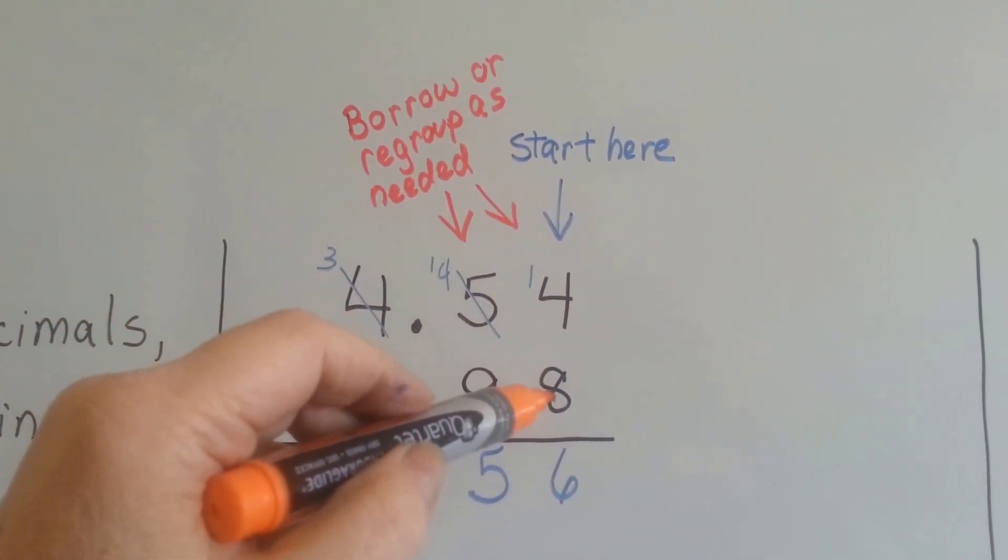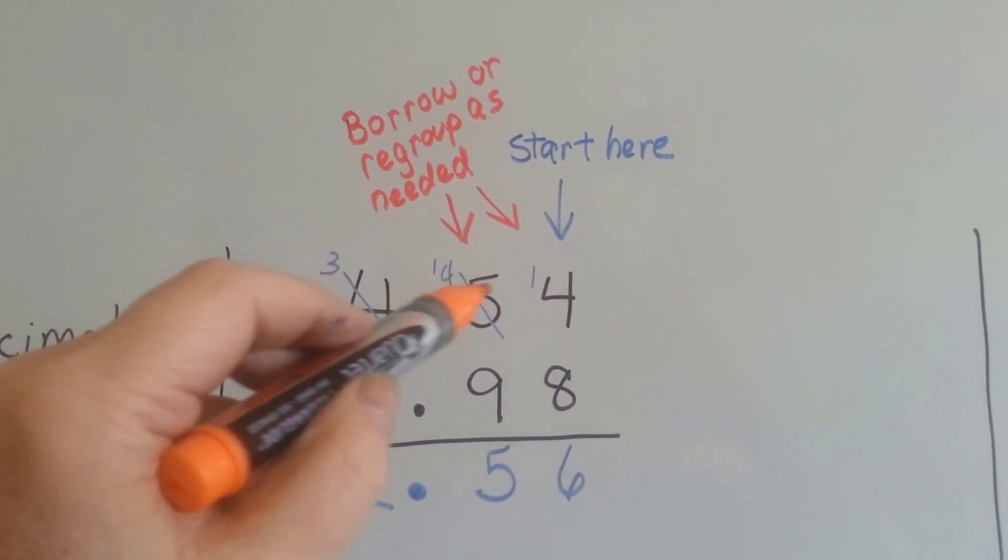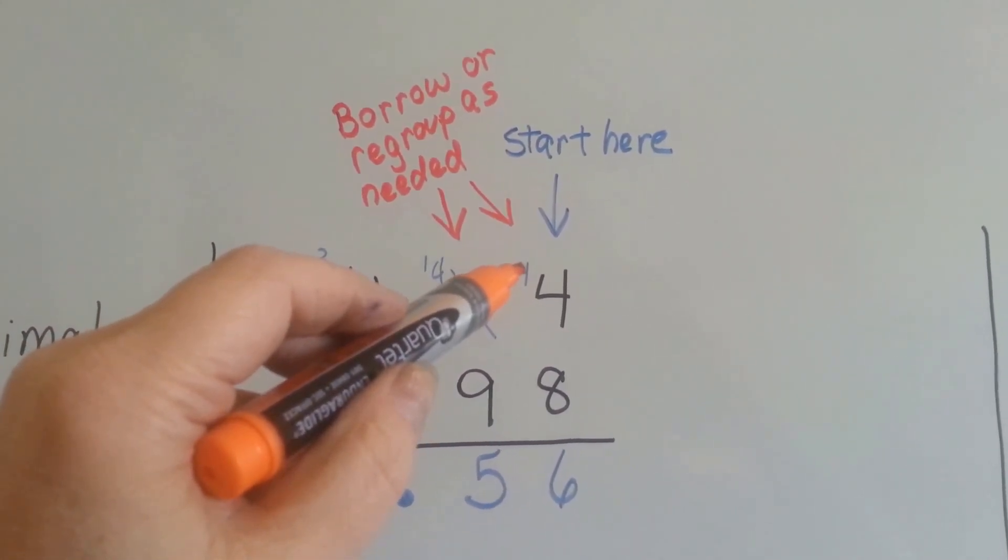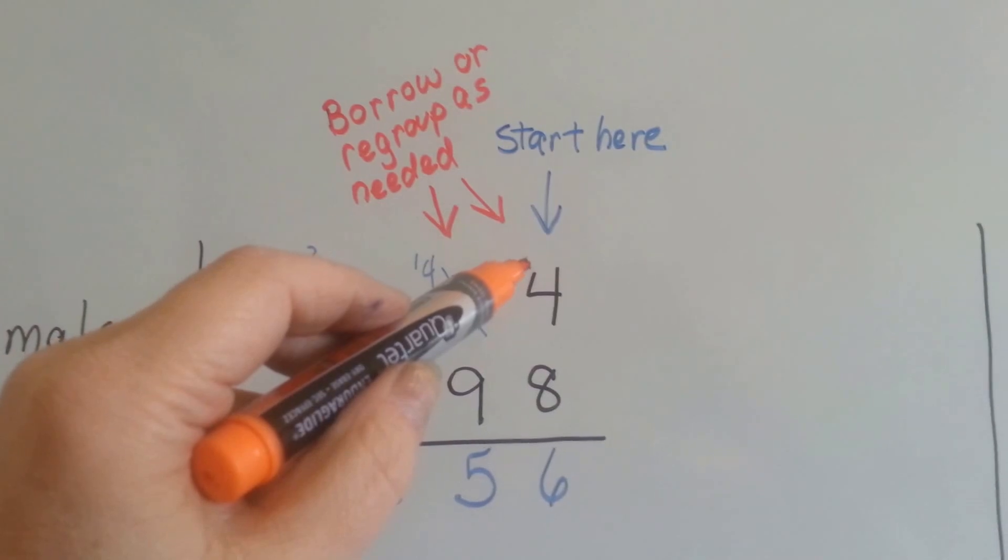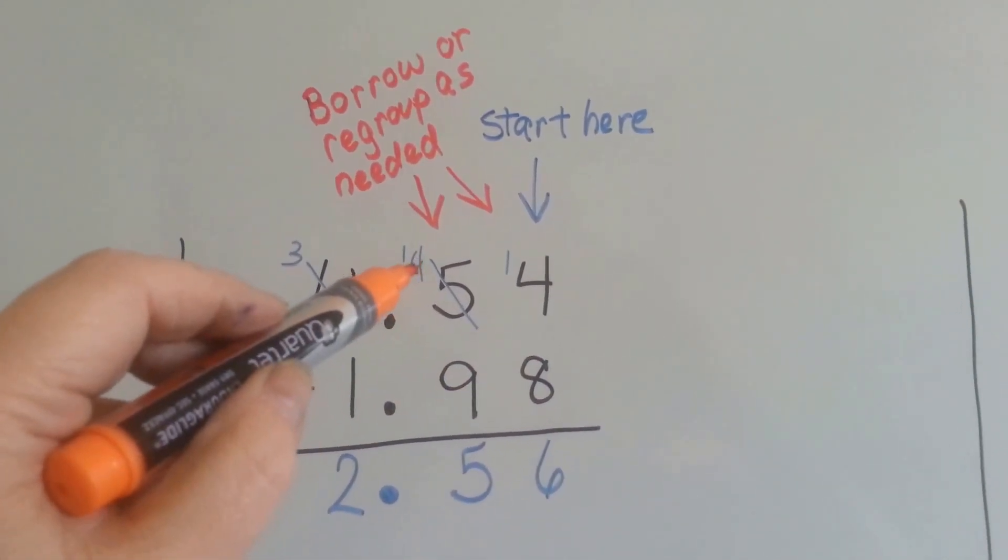4 take away 8, we can't do it, so we borrowed from the 5. It became a 4 and we gave 1 to the 4, so it became 14. 14 take away 8 is 6. Now that's a 4.